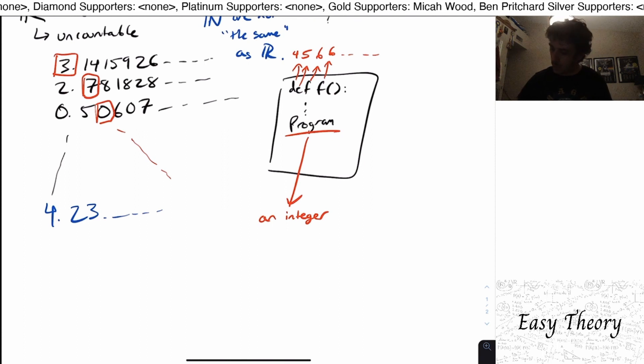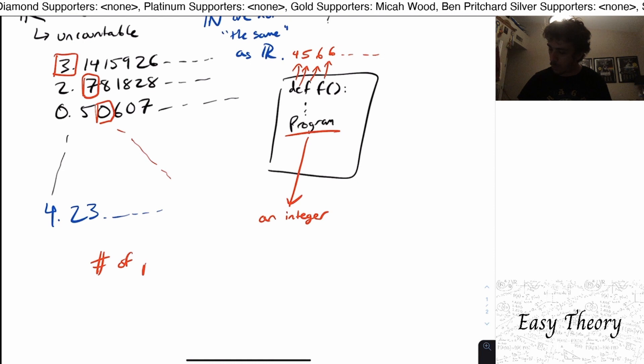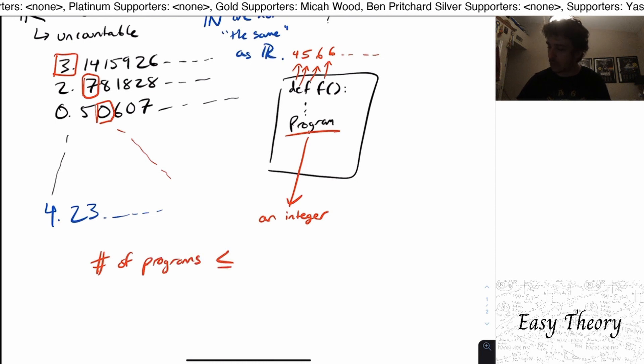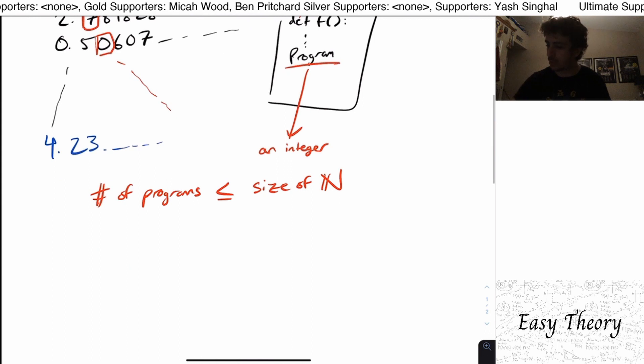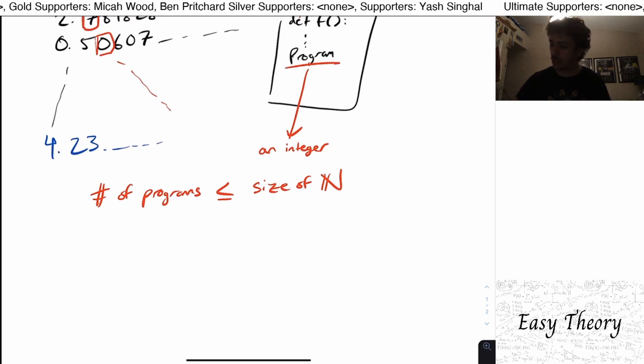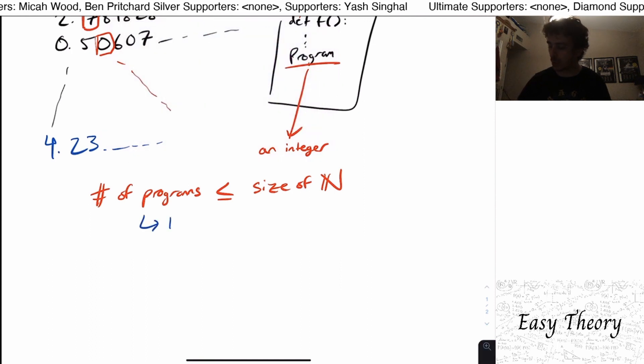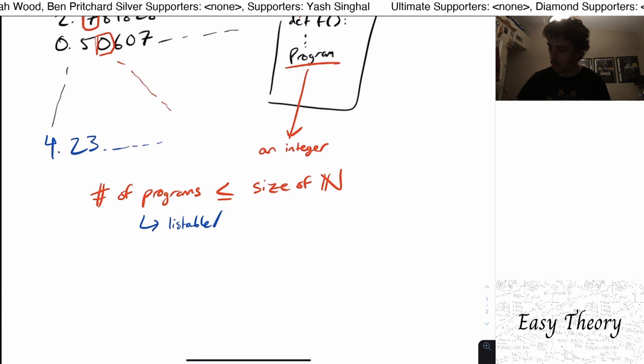So therefore each integer, every program corresponds to an integer and not necessarily vice versa. But so therefore the number of programs is less than or equal to the size of N the natural numbers. And we know that this one is listable so that implies that this one is listable too. So the programs themselves are listable or countable.